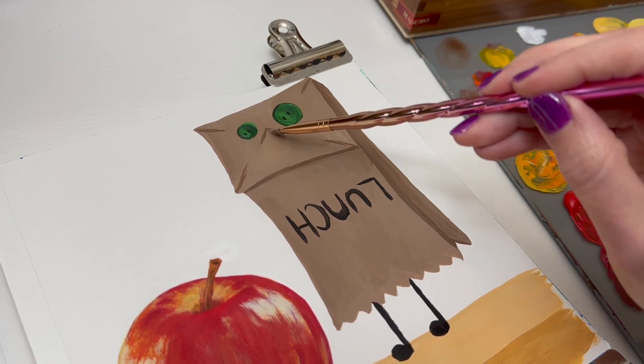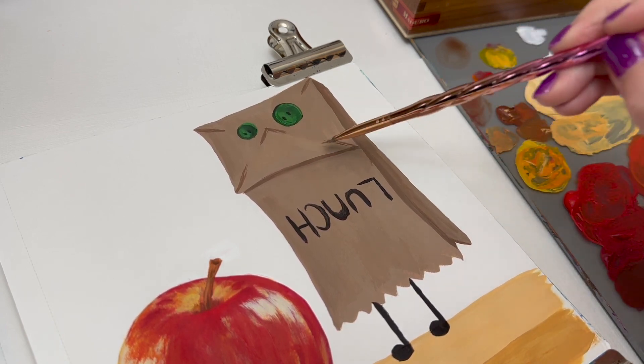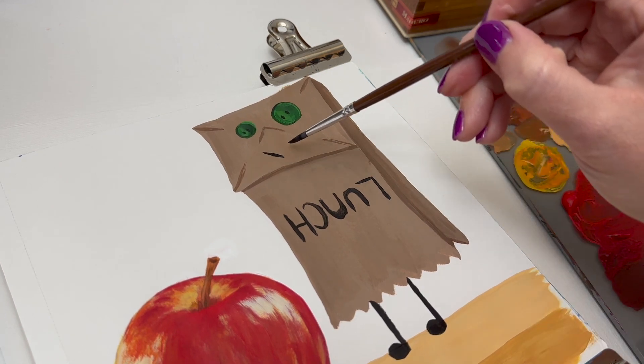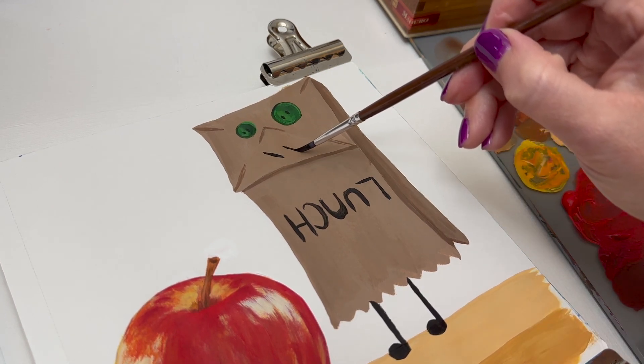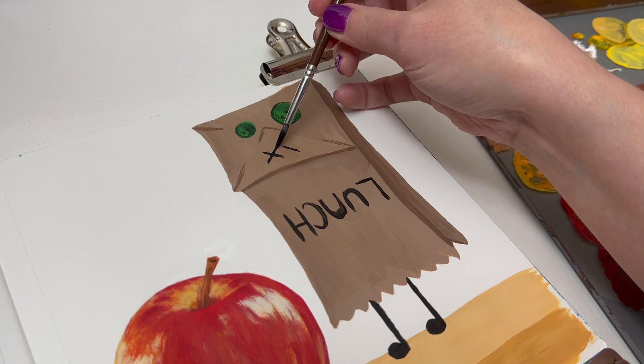I also wanted the letters to be imperfect. I didn't want them to look like they were printed on the bag, and so I kind of gave it a Sharpie kind of look. And then to finish him off, I gave him a mouth. I was a little like, 'what am I going to use to do the mouth?'